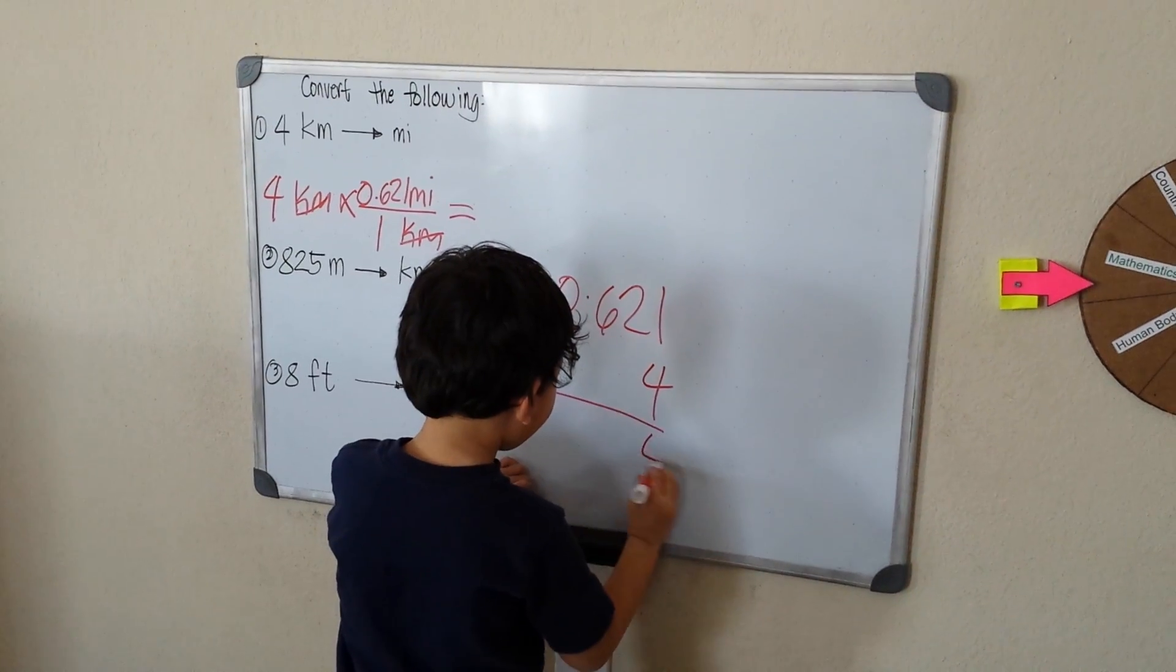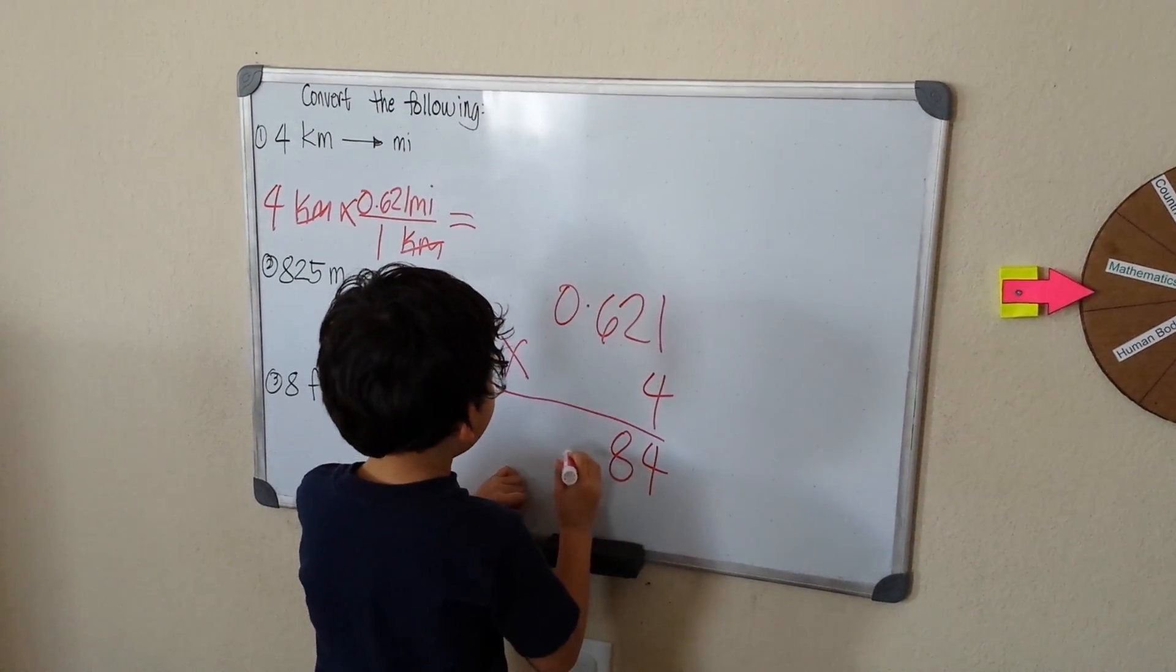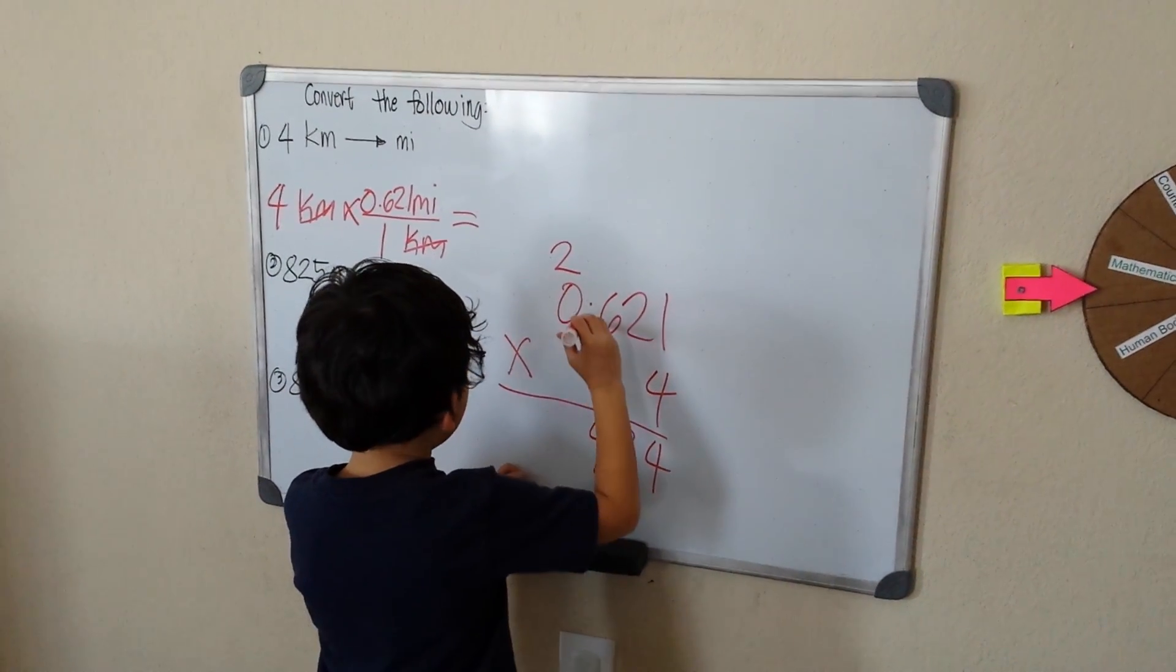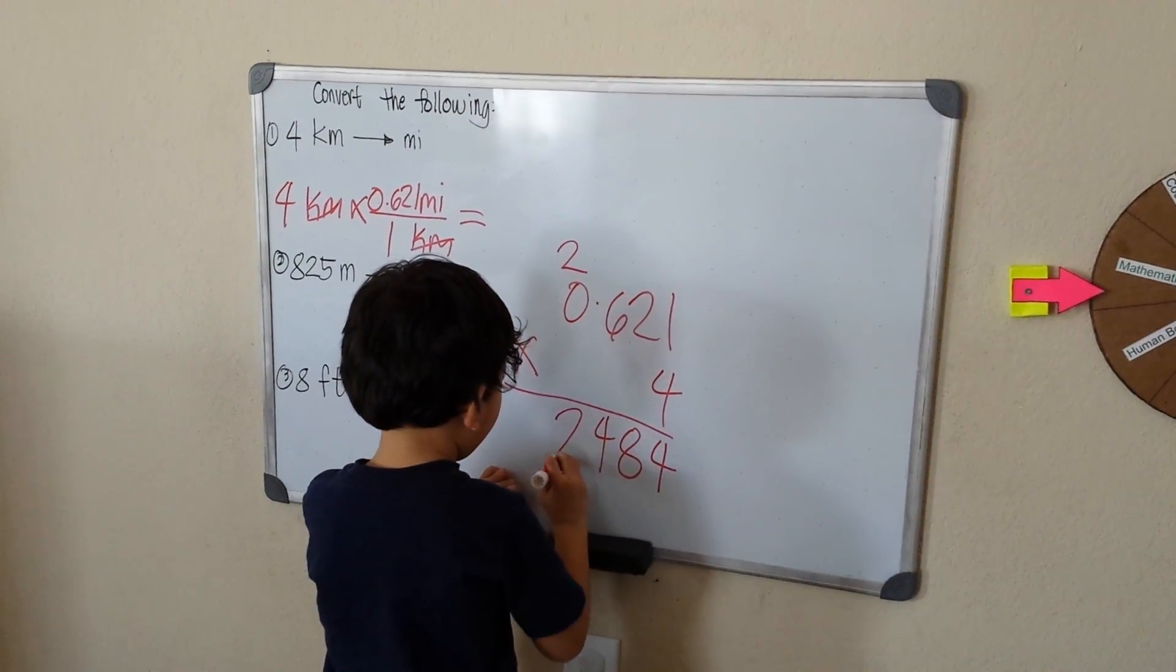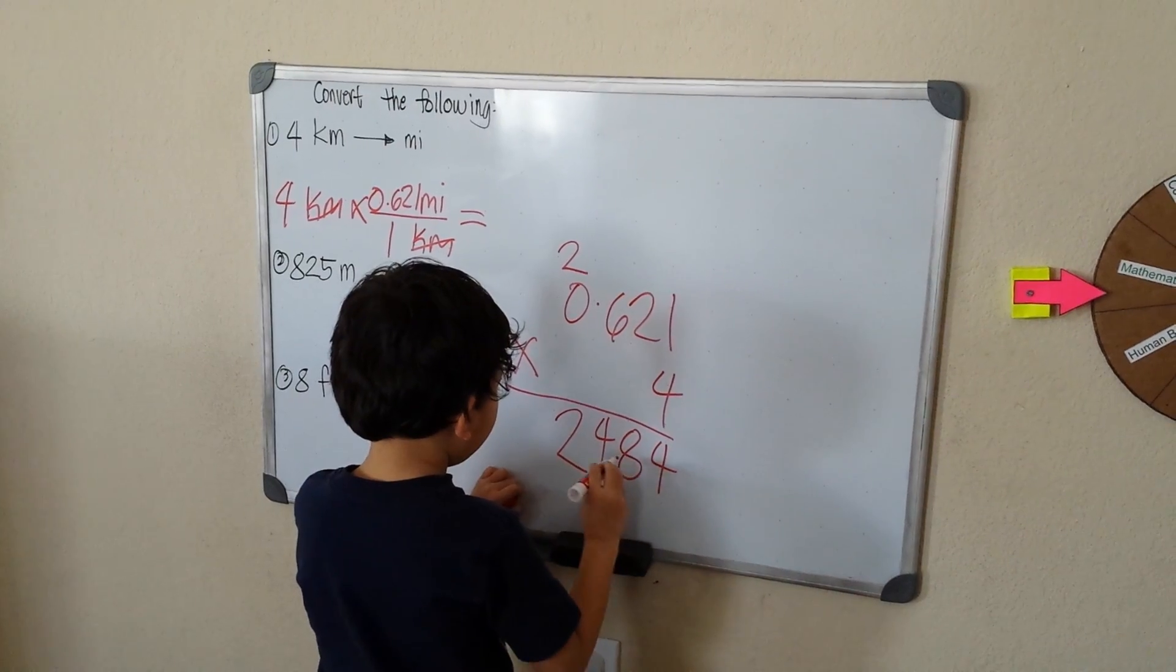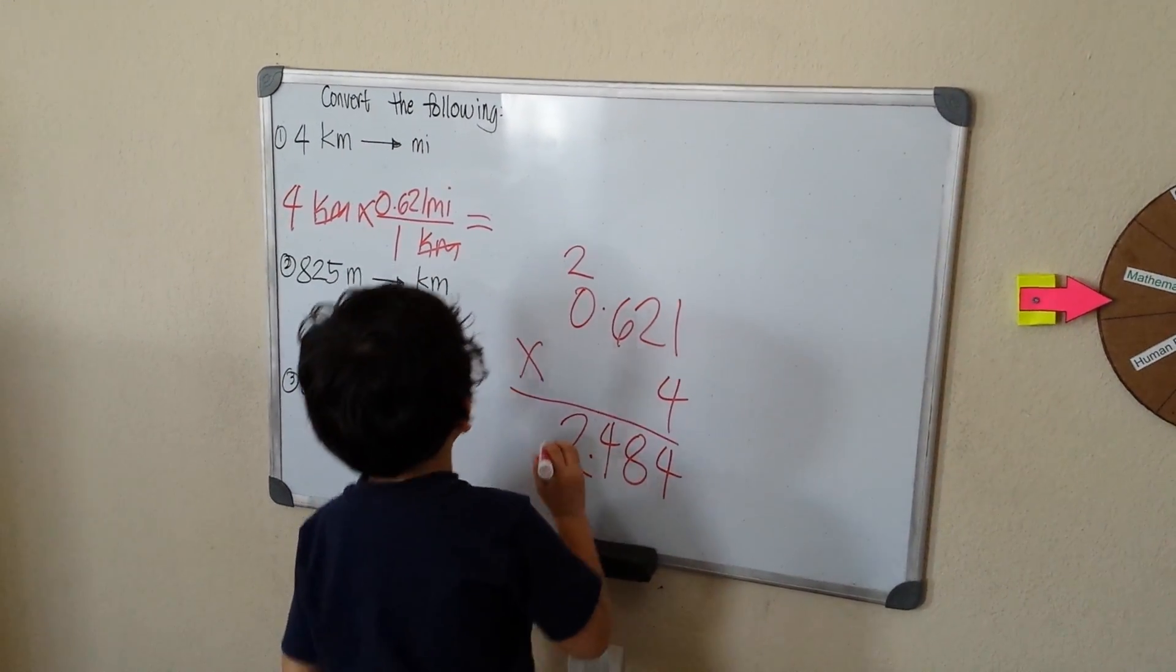4 times 1 is 4. 4 times 2 is 8. 4 times 6 is 24, carry 2. 4 times 0 is 0, plus 2 is 2. So, 1, 2, 3. 1, 2, 3. 2.484.